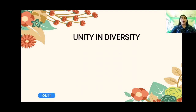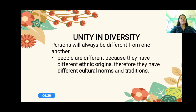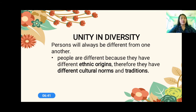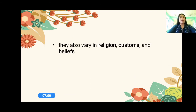There is unity in diversity. A person will always be different from one another. Remember that a person is unique, or one of a kind. People are different because they have different ethnic origins; therefore, they have different cultural norms and traditions. We all have different ethnic origins, and that's what makes us different from other people. You are unique — you are one of a kind.